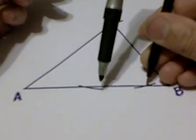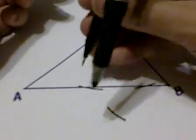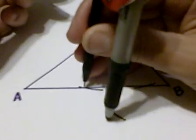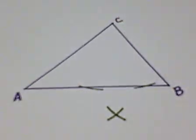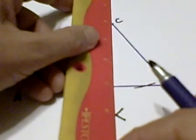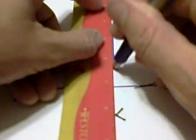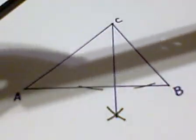We can change our compass setting and from each intersection point of the arcs and the side, strike two arcs to construct an intersection. We'll then draw the first altitude from the vertex through the intersection.